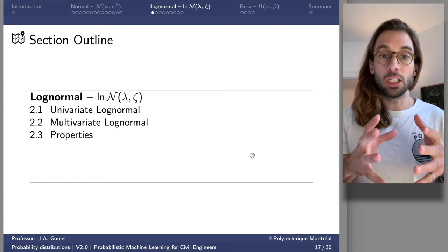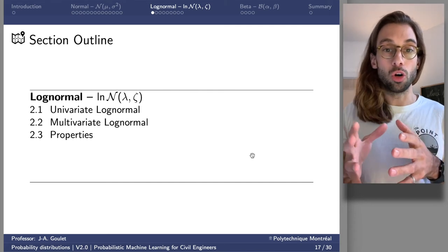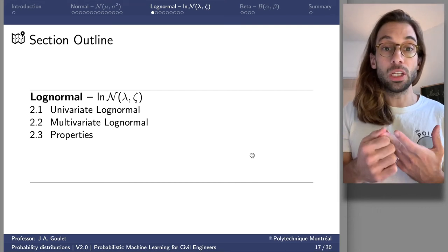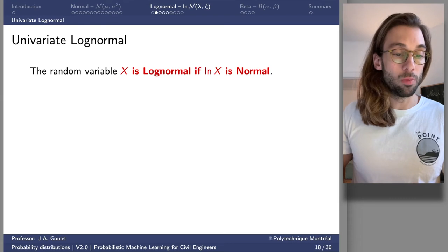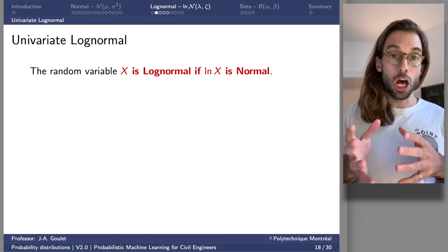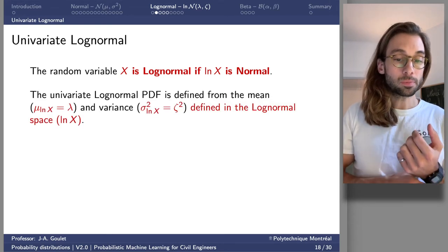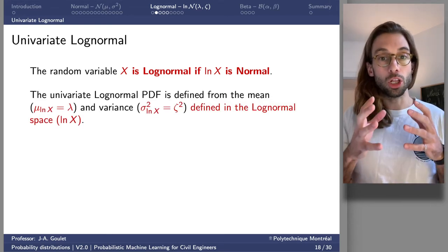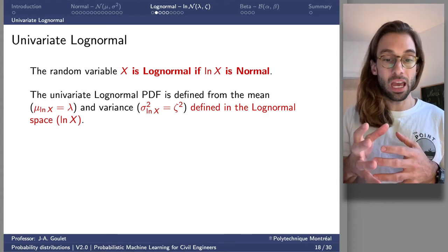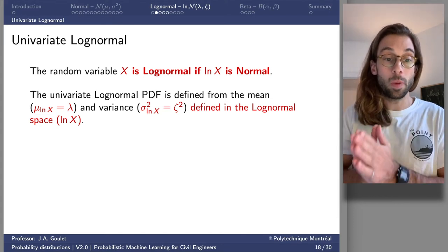Now we look at the log-normal distribution, which shares many properties with the normal. A random variable X is log-normal if the log of that variable is normal. The univariate log-normal PDF is defined using its mean value and variance in the log-transformed space, with parameters typically called lambda (expected value in log space) and zeta^2 (variance in log space).